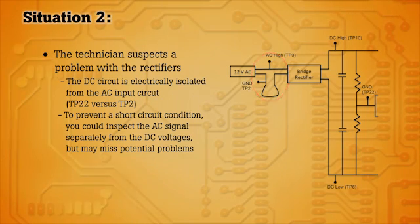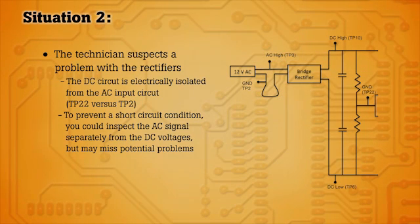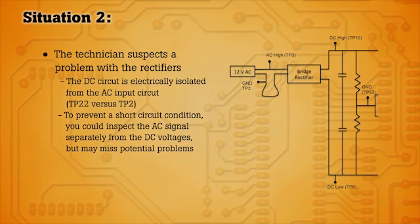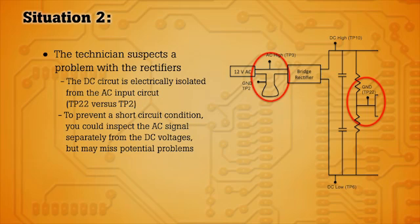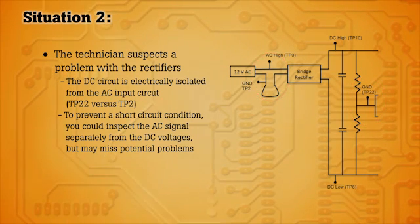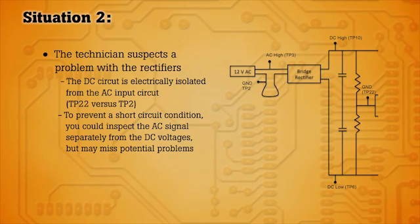To troubleshoot that circuit correctly, it's best to use an isolated input oscilloscope like the Scope Meter 190 series. This will allow you to look at both circuits simultaneously without causing a short circuit and damaging the rectifier or yourself.